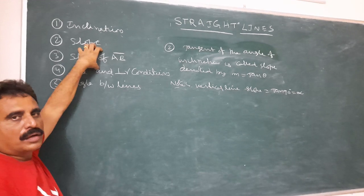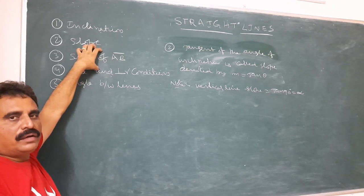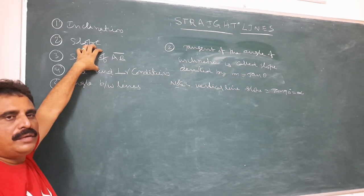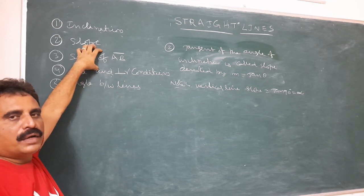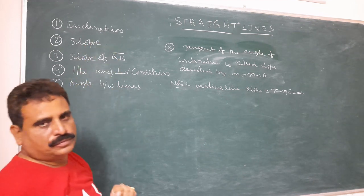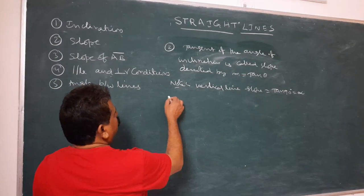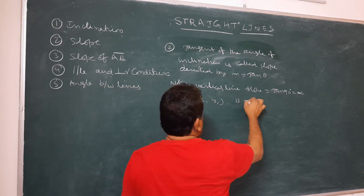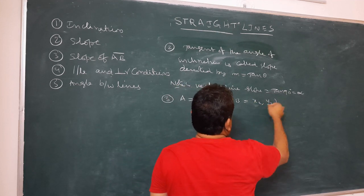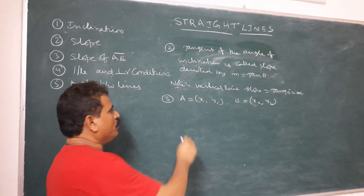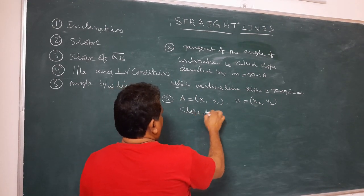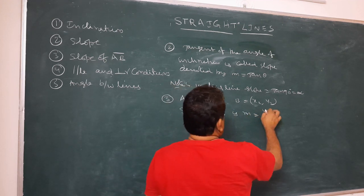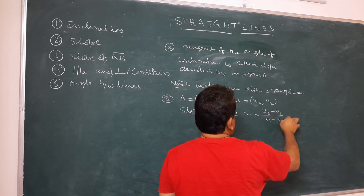The third concept: slope of AB bar. If A(x₁, y₁) and B(x₂, y₂) are two points, then the slope of AB bar is m = (y₂ − y₁) / (x₂ − x₁).